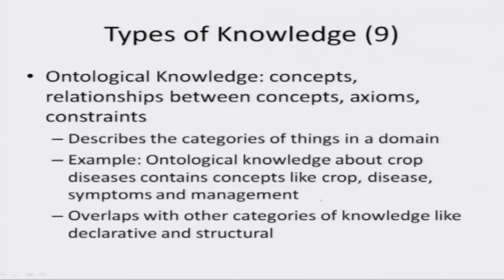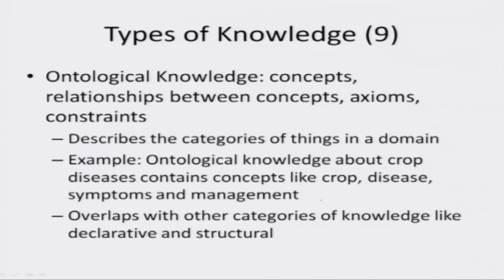Ontological knowledge includes concepts, relationships between concepts, axioms and constraints. It describes the categories of things in a domain. For example, ontological knowledge about crop diseases contains concepts like crop, disease, symptoms and management. It overlaps with other categories of knowledge like declarative and structural. Ontological knowledge is therefore both declarative and structural.